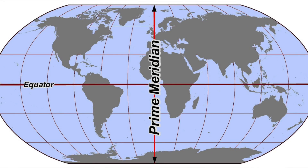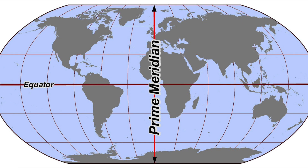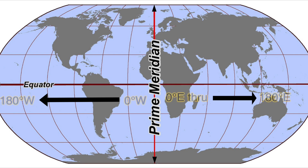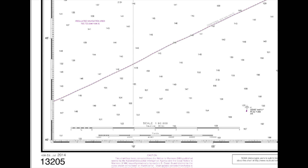When discussing the longitude scale, we start at the prime meridian. There is an imaginary north-south line at Greenwich, England, that splits the Earth into two halves. To the right is the eastern hemisphere, and to the west is the western hemisphere where we are. The longitude scale goes from zero degrees at the prime meridian, running both to the right and to the left, through 180 degrees on the back of the planet called the international date line. Just like the latitude scale, the longitude scale also has 60 minutes for each degree of longitude.